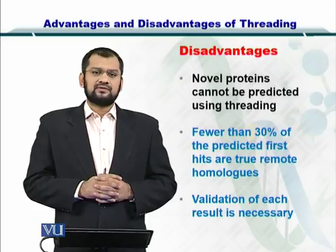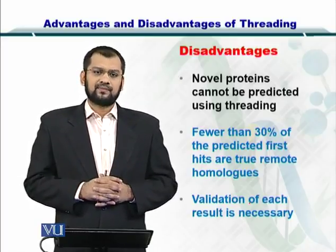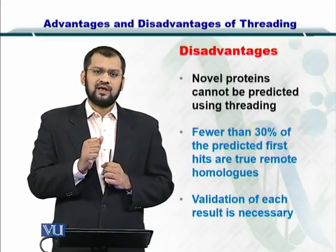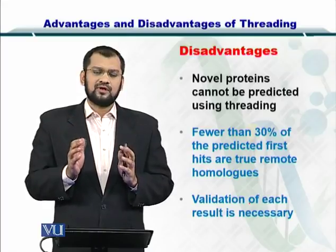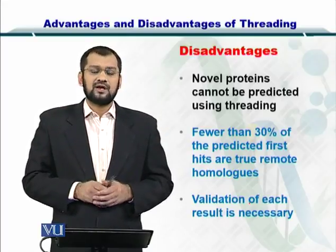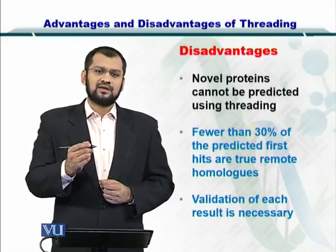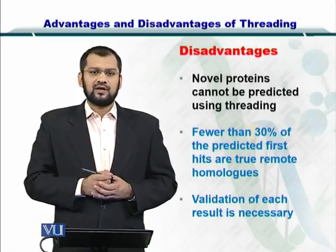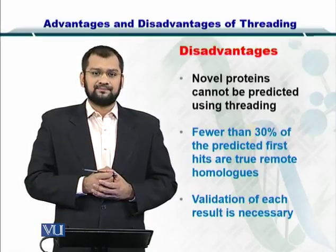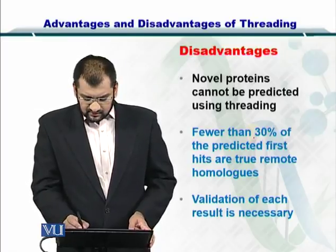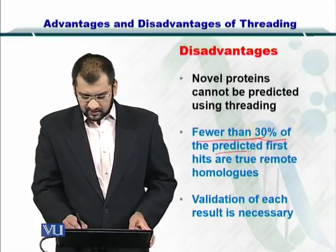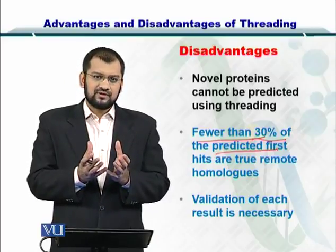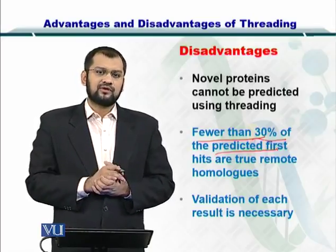Towards the disadvantages: one can think that if you are trying to take some folds from one protein, some other folds from another protein, and creating a combination of these folds to create a new protein structure, then there is a high chance that the structure you create may not be biologically plausible. So validation of the structures output from threading or fold recognition is essential. The result of such a shortcoming is that fewer than 30% of the predicted structures have homologues, meaning you end up creating structures using fold recognition which do not have homologues in the PDB.